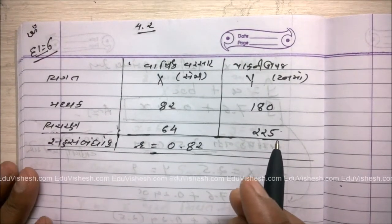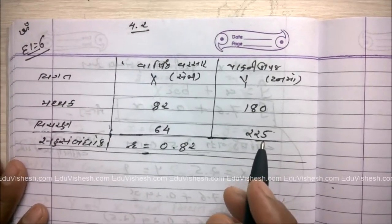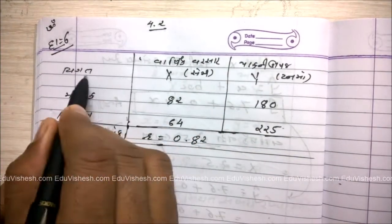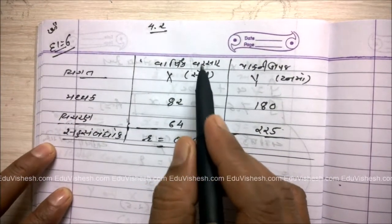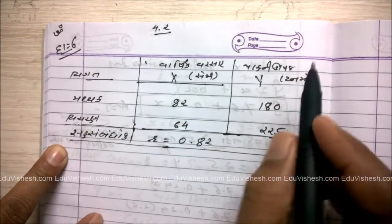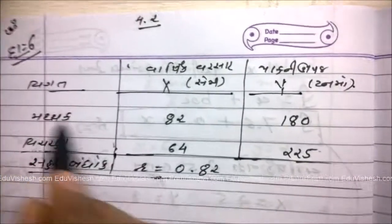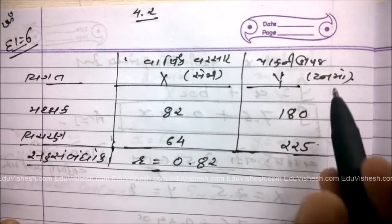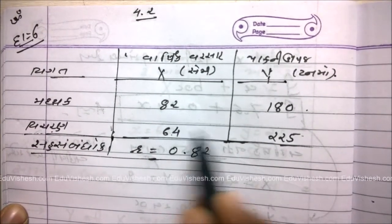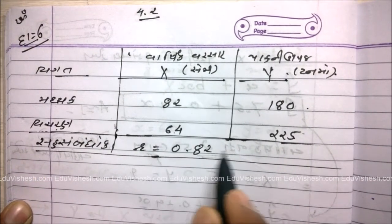સ્ટેટ ભાગ એક, ચેપ્ટર ચાર, સૂરેકીય સંબંધ. દાખલા નંબર છ. આ દાખલામાં કૌંશ (semi) ને X તરીકે ધારીએ છીએ, પાકની ઉપજ ટનમાં જેને Y ચલ. r (સહસંબંધાંક) = 0.82 આપેલ છે.